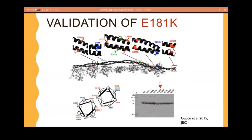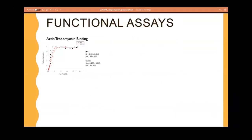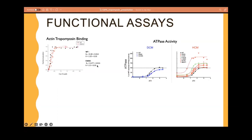We studied E181K — the bioinformatically predicted mutation — alongside known genetic HCM and DCM mutations, colored red and blue respectively. We examined three main regulatory effects of tropomyosin. First, actin binding: we saw a clear difference in mutant tropomyosin–actin binding compared to wild type, with a significant difference in dissociation constant. Second, ATPase activity: E181K clustered with other HCM mutants, showing increased ATPase activity compared to wild type.